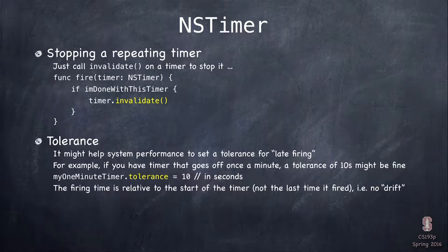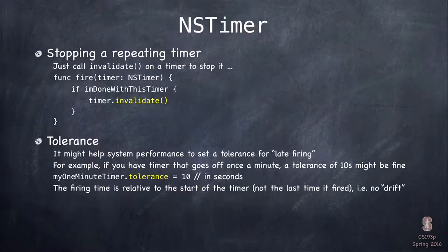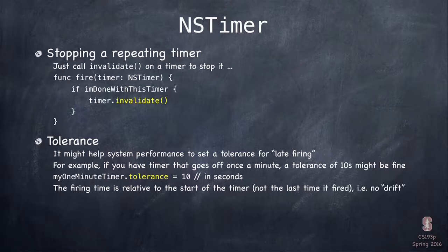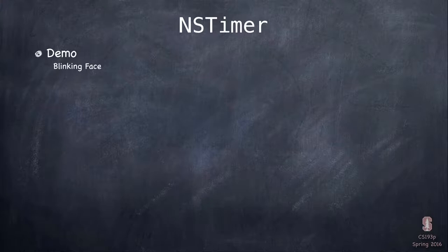You can specify a tolerance on the timer — how much slop you'll accept in when it fires. For example, a timer that goes off once a minute with a tolerance of ten seconds means anywhere from one minute to a minute and ten seconds is fine. This allows the system to be more efficient with its processor. Importantly, this tolerance does not cause drift: if the first firing is late, the next one still targets two minutes from the beginning, not from the late firing.